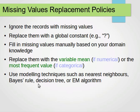Such as the nearest neighbor algorithm, Bayes rule, decision trees, and so on. I hope this makes sense. These are some strategies and policies for treating missing values. Thanks very much for watching, and I'll see you in one of my next videos.